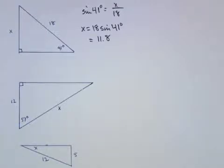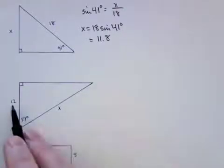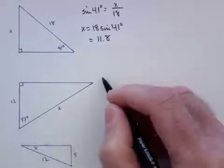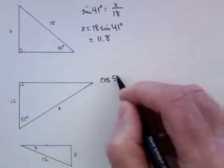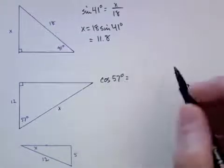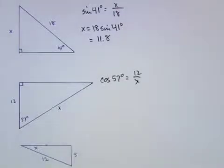We need to employ the cosine in this case, right? Because we know the adjacent length and we want to know the hypotenuse. So we can say the cosine of 57 degrees is equal to 12 over x.